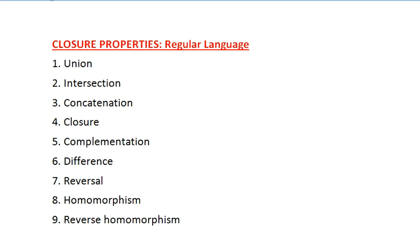Regarding closure properties, we have nine properties. Apart from these, three more properties exist, but these nine are enough to understand how closure works with a regular language.